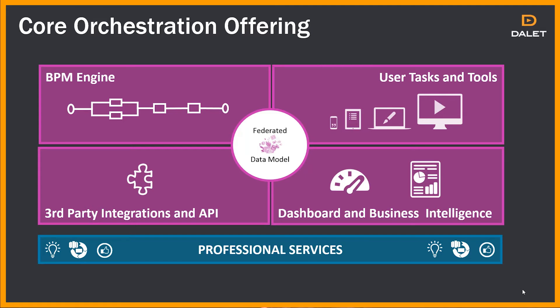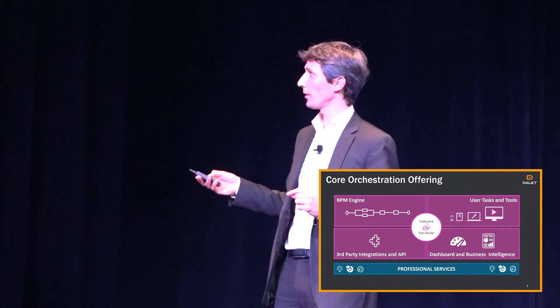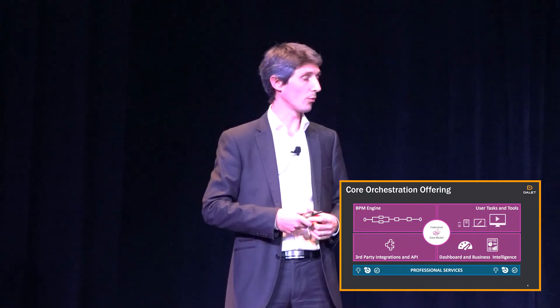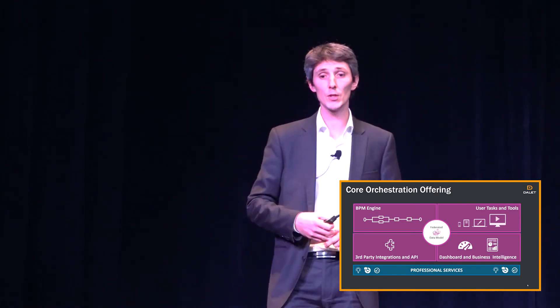The first component is the BPM engine itself, which allows you to design, manage, and monitor your workflows efficiently, combining automated tasks as well as user tasks. The user task piece is very key — having the ability to assign a task to the right user at the right time on the right assets with the right tool. We also have a set of third-party integrations and APIs, a dashboard and business intelligence reporting giving you real-time access to process monitoring as well as visibility on key performance indicators. We also bring consultancy services, because moving to orchestration solutions is a good opportunity to change your internal processes, and you may need professional services to help with those changes.